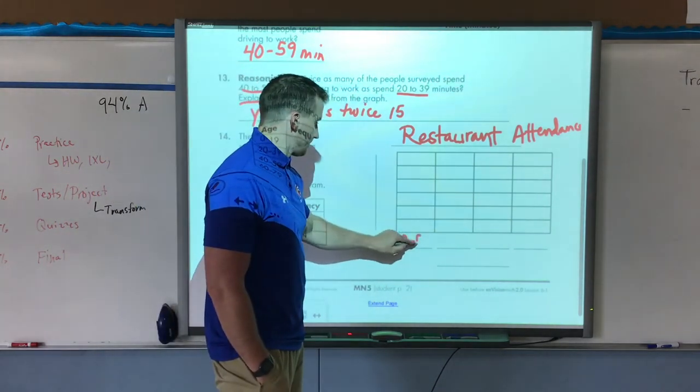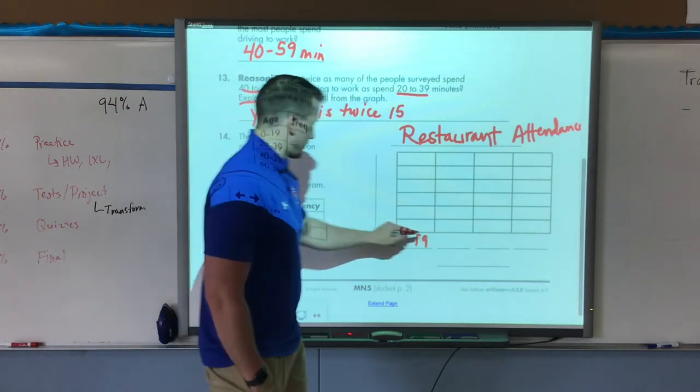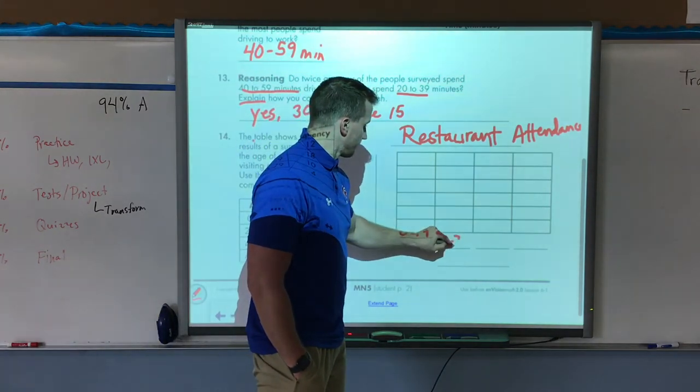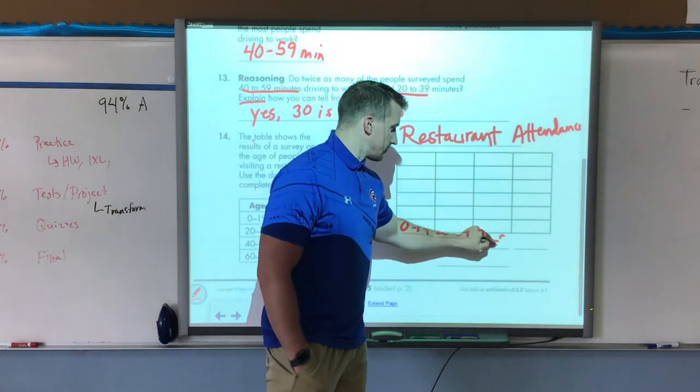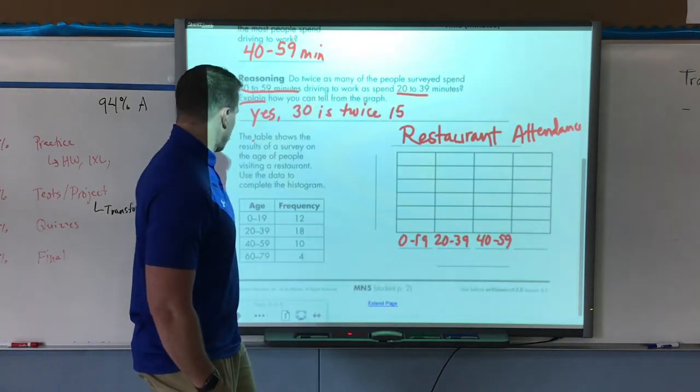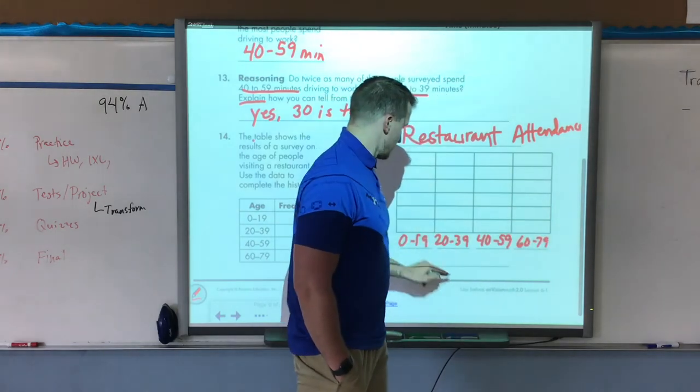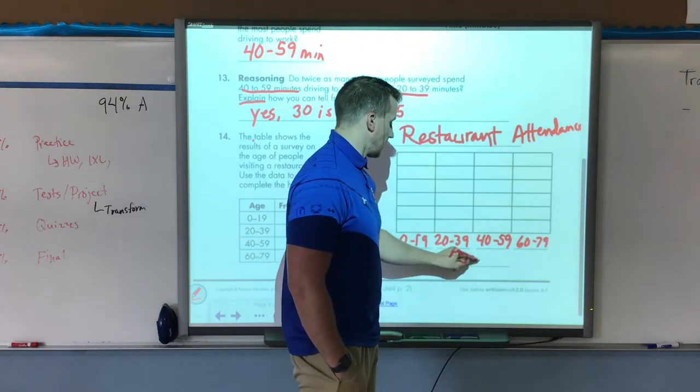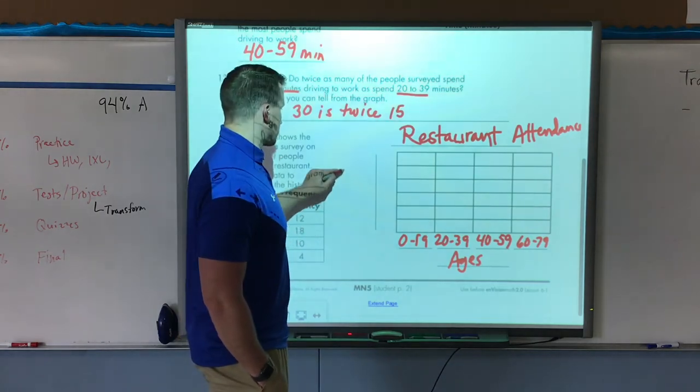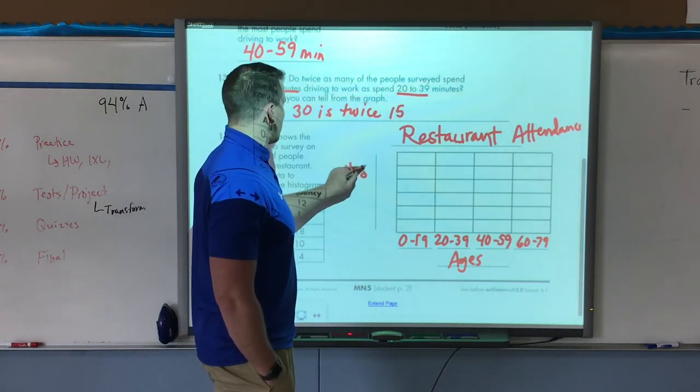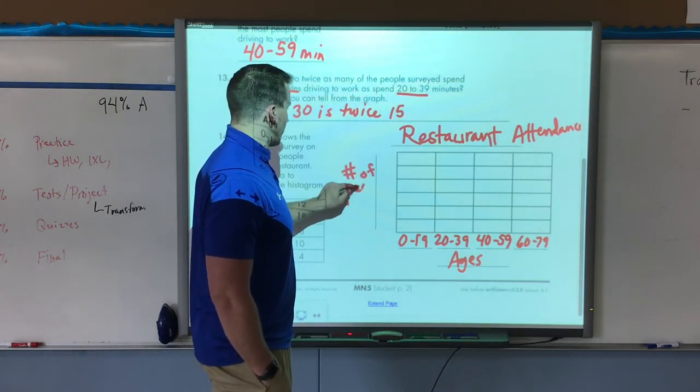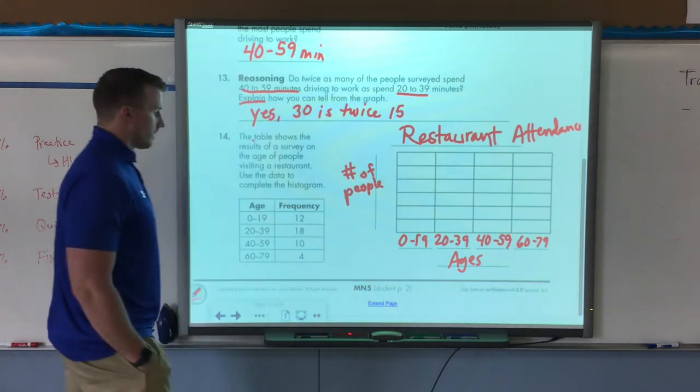Down here I'm going to put the frequencies: 0 to 19, 20 to 39, 40 to 59, and 60 to 79. Down here I labeled this as the ages of people. Off to the side, this is the number of people. I don't want to write it sideways because it's hard to read on a video.